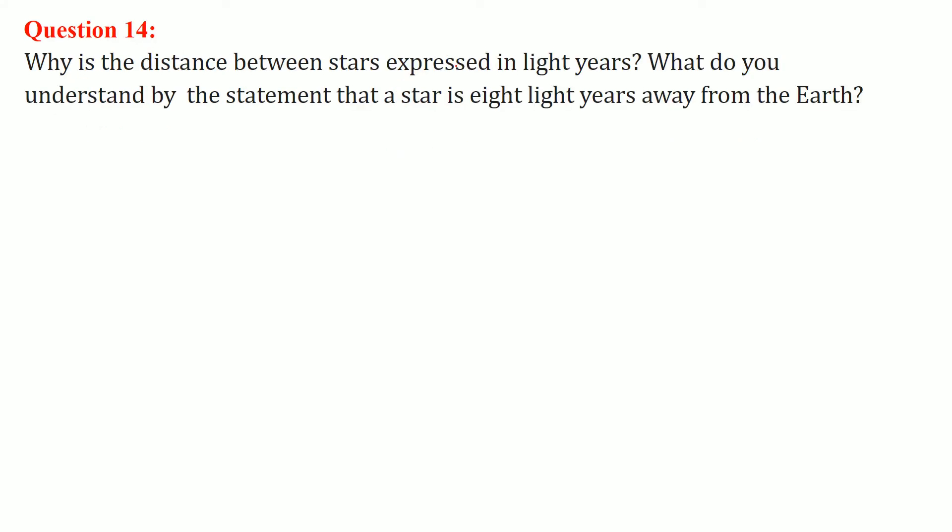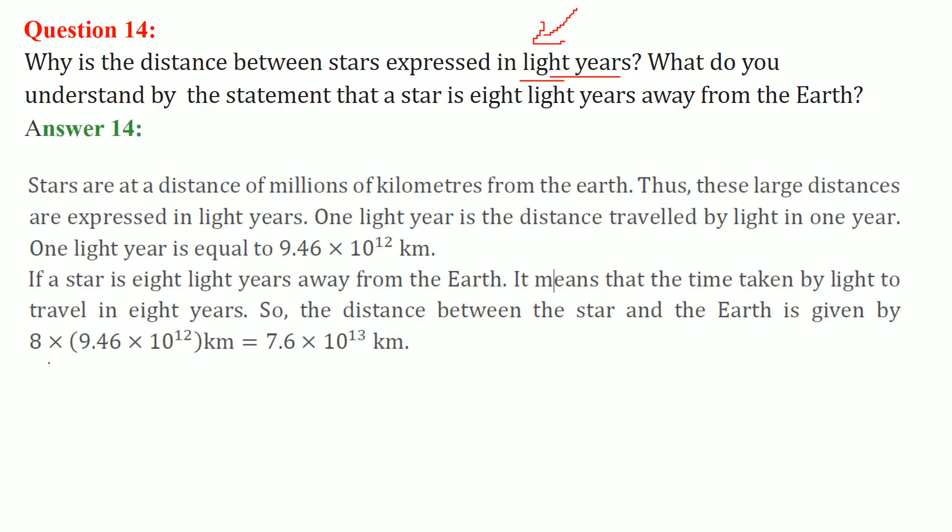Why is the distance between stars expressed in light years? Light travels with certain speed. Now the stars are so far that you cannot use kilometers because it will be a very huge number. That is why light years are used to express the distances. Stars are at a distance of millions of kilometers from Earth, and these are very large distances. One light year is the distance traveled by light in one year. One light year is equal to 9.46 × 10^12 kilometers.